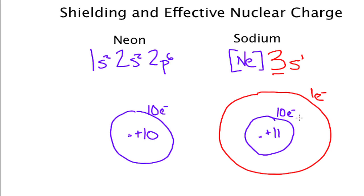And so the net charge that this electron sees is going to be much less than plus 11. That's because there's 11 positive charges but there's also 10 negative charges that are essentially in the way.